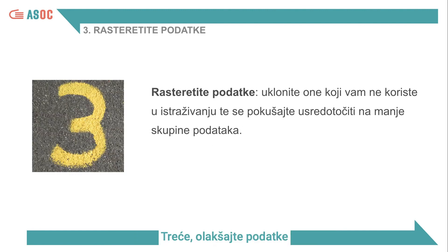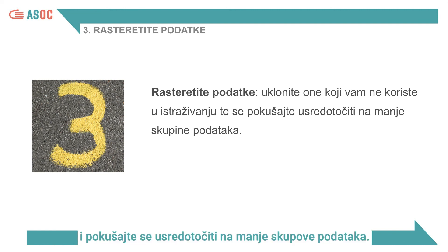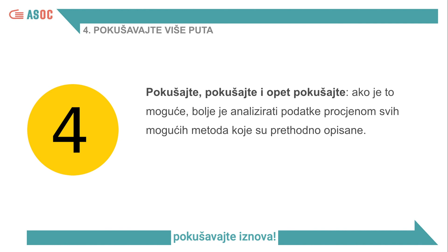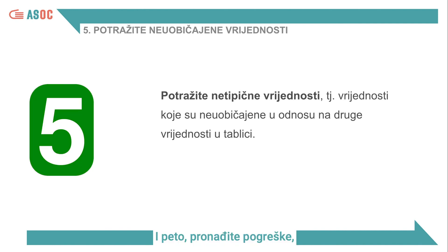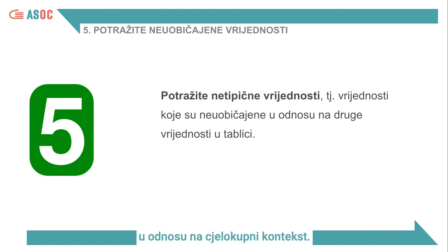Third, lighten the data: remove those that are not helpful for your research and try to focus on smaller data sets. Fourth, try multiple times — explore many paths and try again and again. Fifth, find the errors: look for the outliers, which are the anomalous values that can highlight important pieces of information with respect to the overall context.